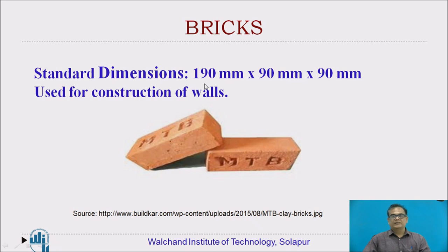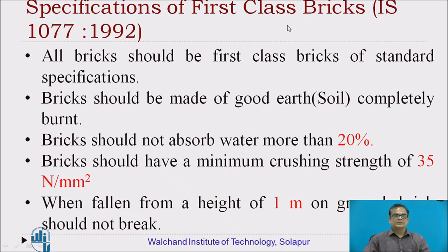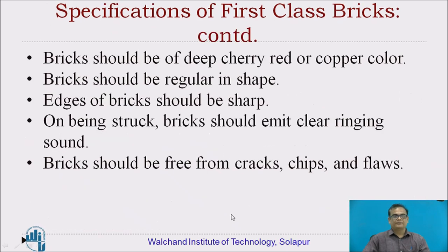Bricks: standard dimensions are 190 mm × 90 mm × 90 mm. Bricks are used for construction of walls and are provided with frogs so that there is good bond between two layers. Specifications of first-class bricks as per IS 1077: bricks should be made of good earth (soil), well burnt. They should not absorb water more than 20%. Minimum crushing strength should be 35 N per mm². When fallen from a height of 1 meter on the ground, they should not break. Bricks should be of deep cherry-red, copper color, regular in shape, with sharp edges. When struck, they should emit a clear ringing sound, and there should not be any cracks, chips, or flaws.